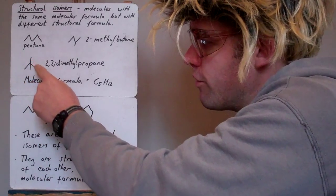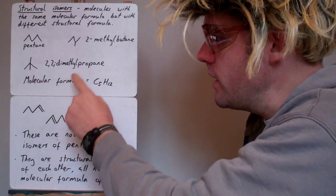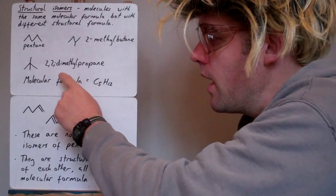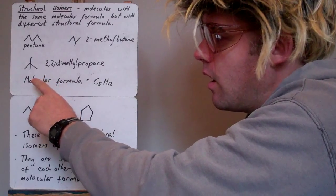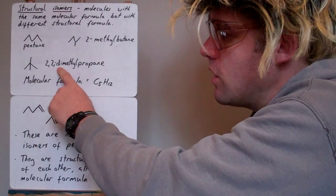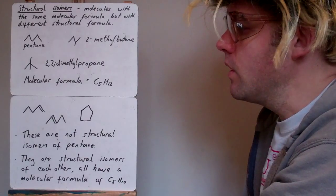Here we've got 1, 2, 3 carbons in the main chain, so that's propane. And then we've got 2 methyl groups both coming off the second carbon, so it's 2,2-dimethyl. Di because there's 2 of them.